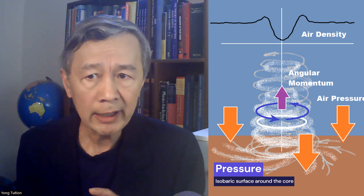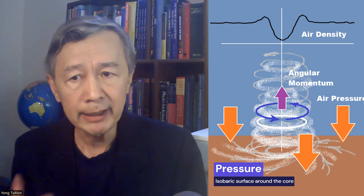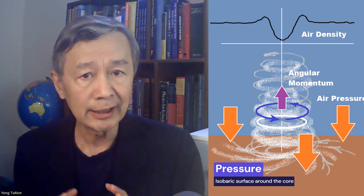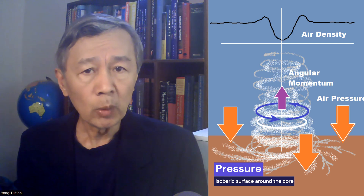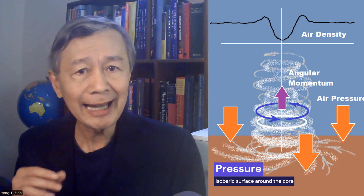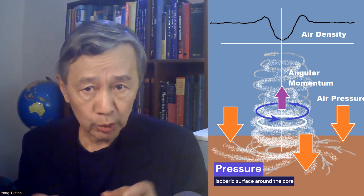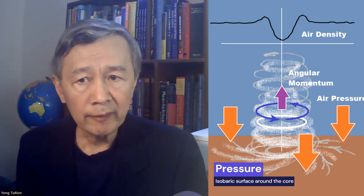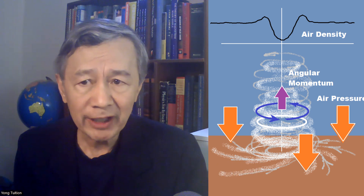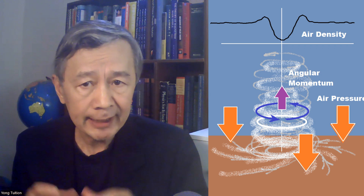Therefore, one has to take centrifugal force into account that makes the relatively empty core sustainable. The reason why the dust moves around the core with increasing angular velocity as they move closer to the center is because of the conservation law of angular momentum, which stops them getting too close to the less dense core.